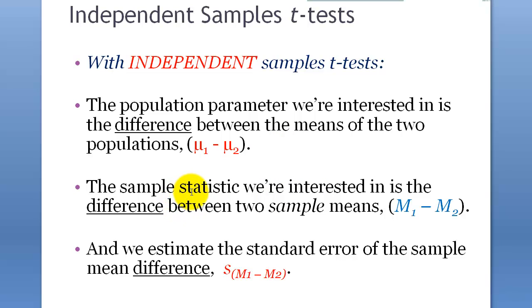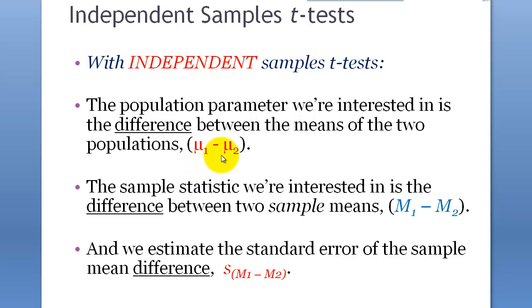The sample statistic we are interested in is the difference between the two sample means. Of course, we can't directly compute mu1 minus mu2 — that is the hypothesis we are trying to test. Instead, we use the sample means and estimate the standard error of the sample mean difference. What we are interested in is the difference of the means, and the standard error is also the standard error of the difference of the means.